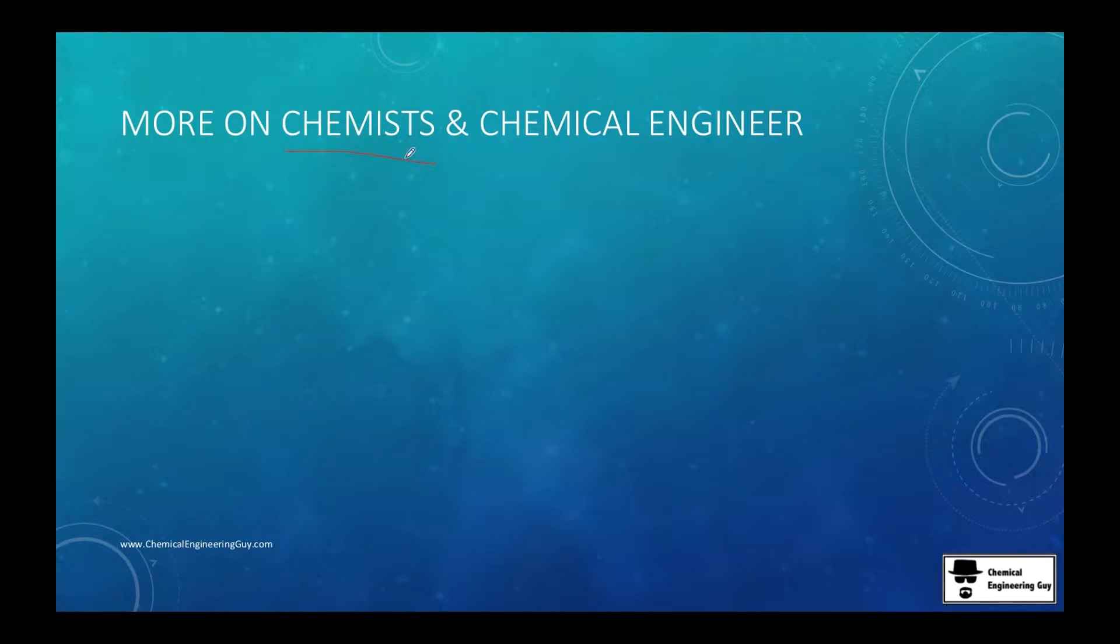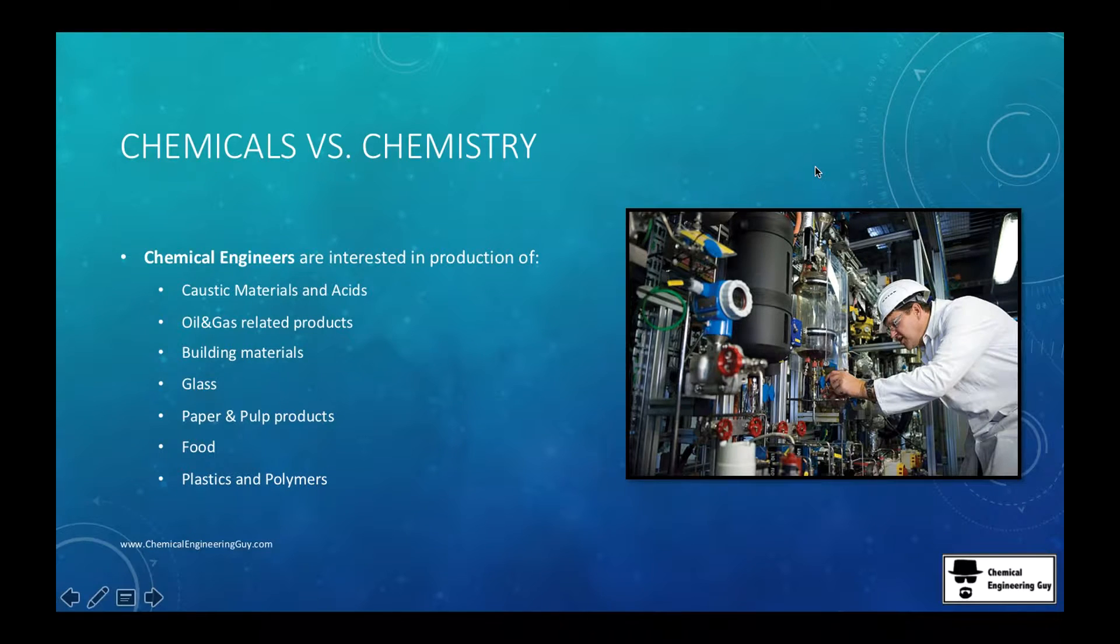Let's talk a little bit more about chemists and chemical engineers. These are generalizations. Chemical engineers are interested in production of caustic materials and acids such as hydrogen chloride, sulfuric acid, and caustic soda. You want to do these in huge scales because they are very commodity, very cheap, and we need them a lot.